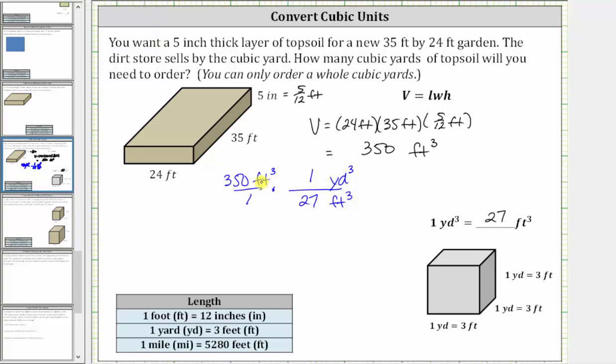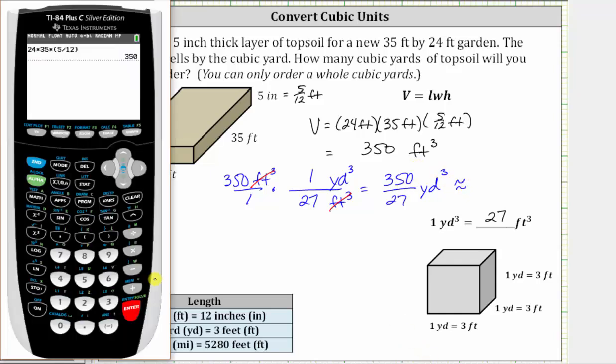Because we have cubic feet divided by cubic feet, the units of cubic feet simplify out, leaving us with cubic yards. Now multiplying, notice how we have 350 over 27 cubic yards. Let's go back to the calculator and determine this quotient. 350 divided by 27 is approximately 12.96.